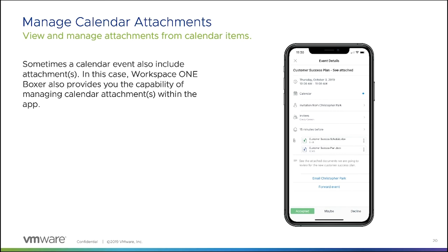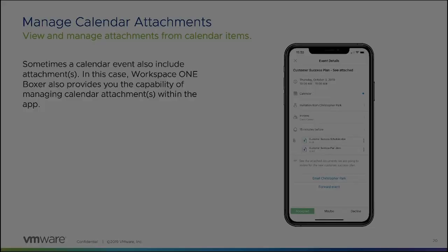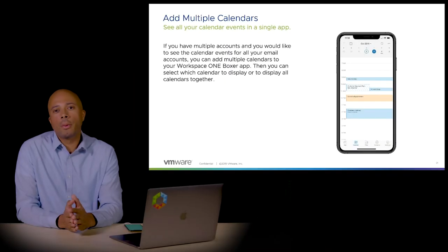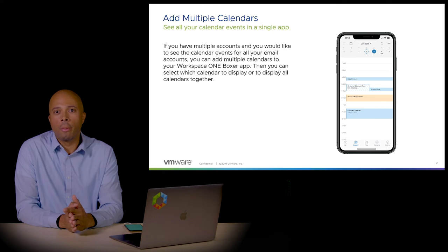You can also manage calendar attachments inside the Boxer application. Sometimes a calendar event will include an attachment — if you click on the event, you can download the attachment and it will go to your files folder.